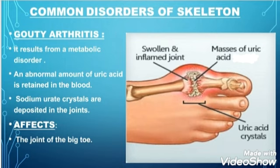The third type of arthritis is gouty arthritis. Unlike osteo and rheumatoid arthritis, it is a metabolic disorder. An abnormal amount of uric acid is retained in the blood. Uric acid is produced in the body by the breakdown of purines. When we take food high in protein, uric acid accumulates in the body in the form of crystals in joints, causing pain, swelling, and inflammation. Sodium urate crystals are deposited in the joints, and the region mainly affected by gouty arthritis is the big toe joint, as seen in the diagram.